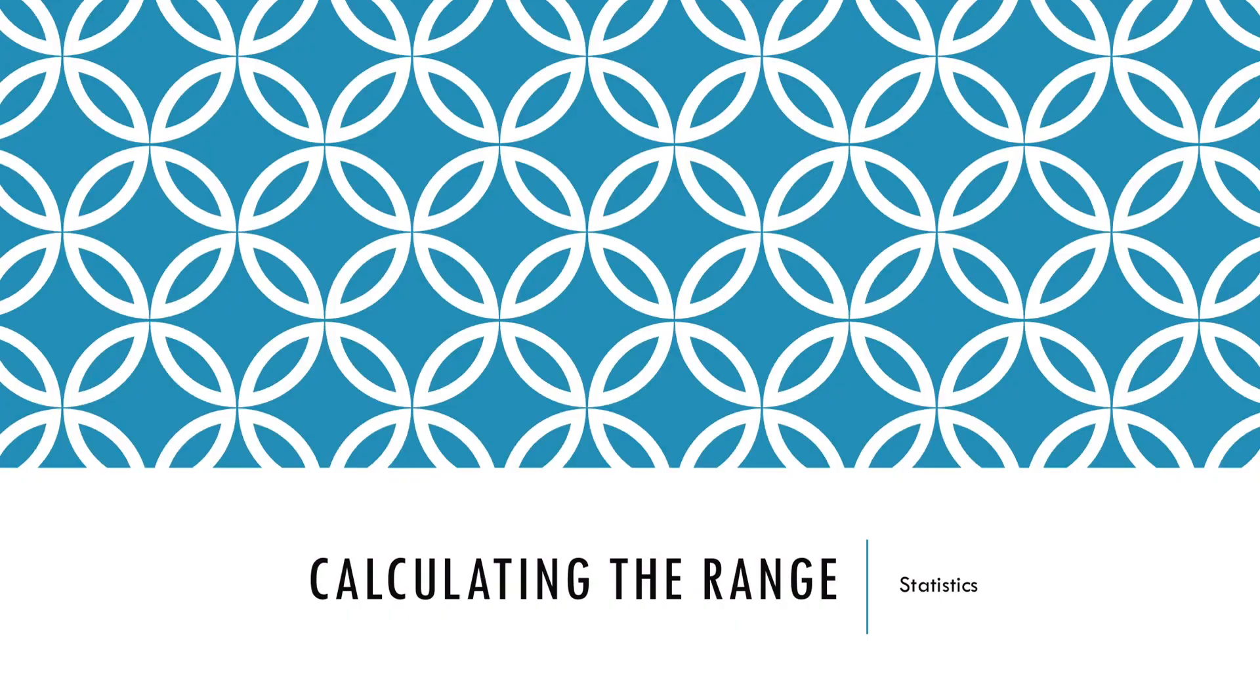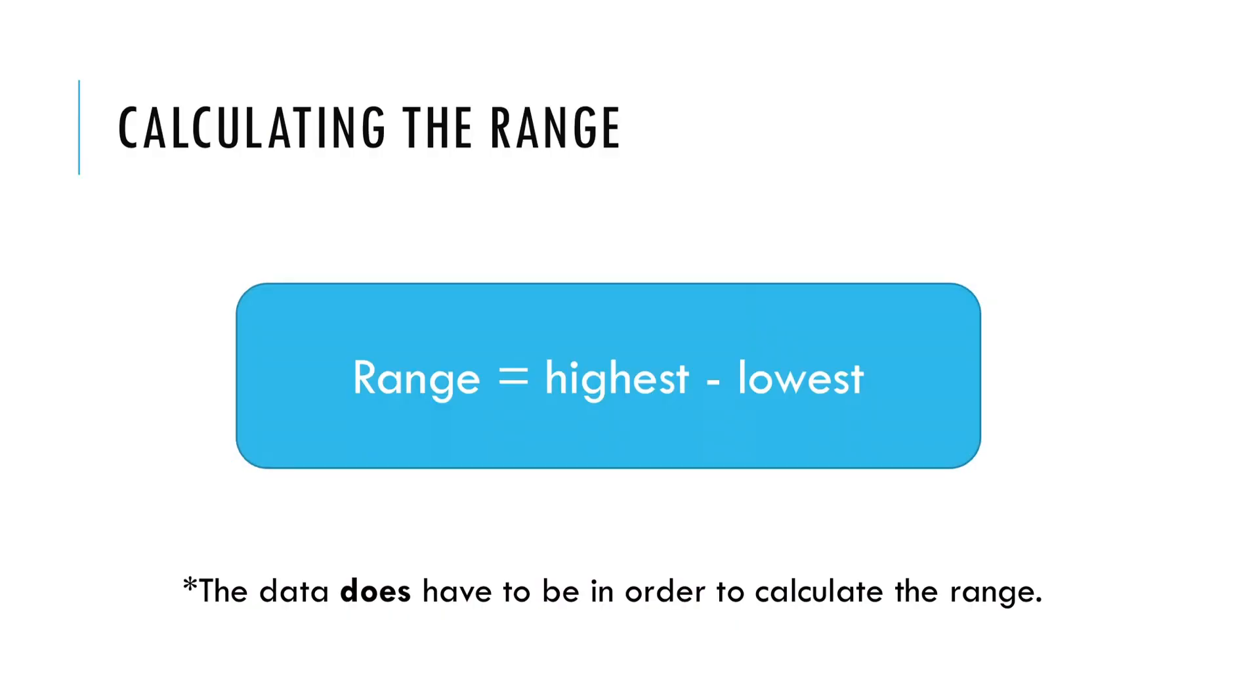That is all there is to calculating mean. Next we'll go on to calculating the range. Now the range is a measure of the spread of the data. So the higher the range, the more widespread the data is. The lower the range, the closer together all of the different numbers are that you have been given. We calculate the range by doing the highest number take away the lowest number. Now the data does have to be in order to calculate the range. If it's not, you might miss the lowest number or the highest number. So the best thing to do is just put it in order.